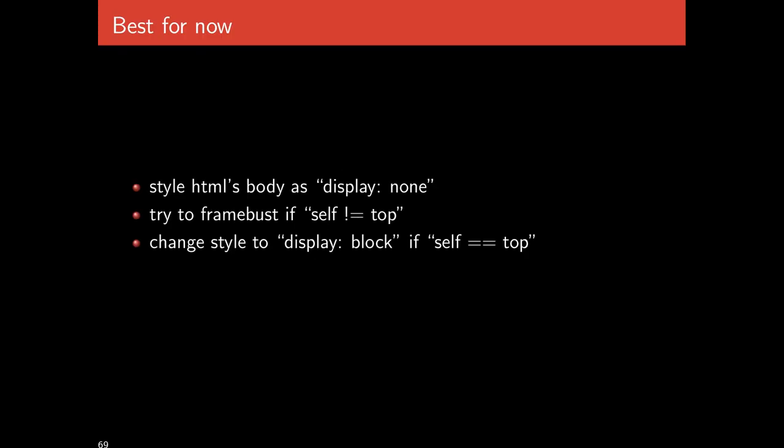The best approach for now is to style the HTML body as 'display: none' so nothing appears. Then you attempt to frame-bust if you find that self is not equal to top — check to see if you are iframed at any depth. If you are, try to frame-bust. Then check that you actually succeeded in frame-busting. If you did succeed, change the display to 'block' so it actually appears and renders. If you do not succeed in frame-busting, then you don't show the page to the user at all.